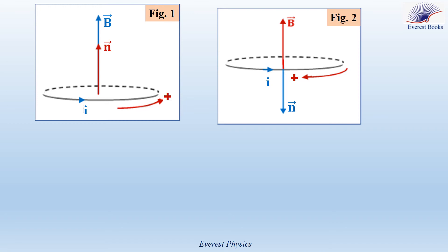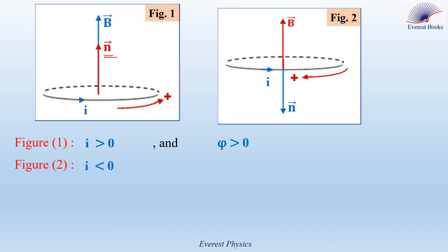Now let's specify the sign of L. Observe figure 1: the current is in the chosen positive sense, so the current is positive. If you curl the fingers of your right hand in the chosen positive sense, your thumb points vertically upwards — the direction of the unit vector n perpendicular to the plane of the conducting loop. This means the magnetic flux crossing the conducting loop due to its current is positive. In figure 2, the current is opposite to the chosen positive sense, so the current is negative. The unit vector n is vertically downward, so φ is negative.